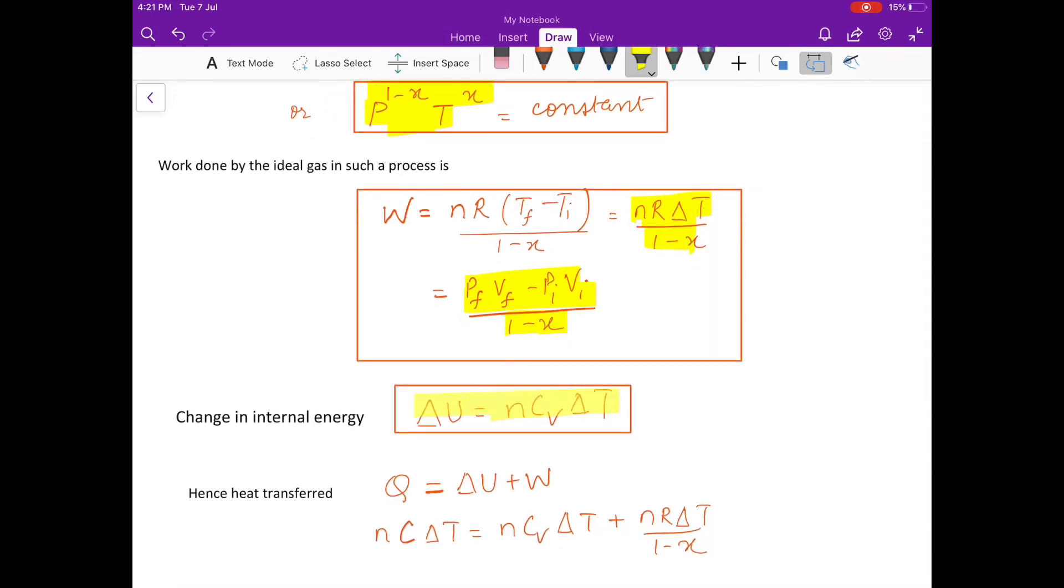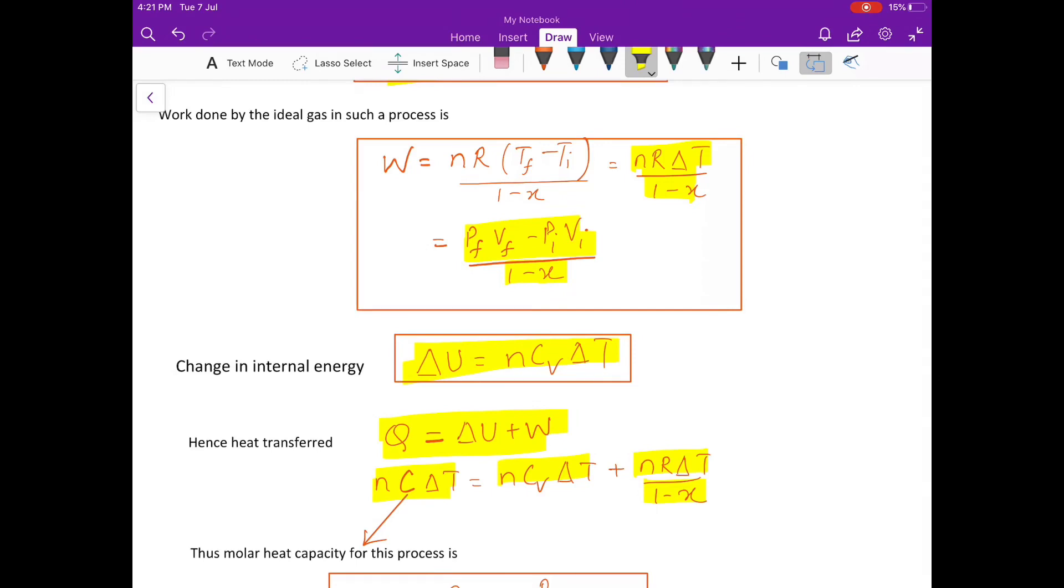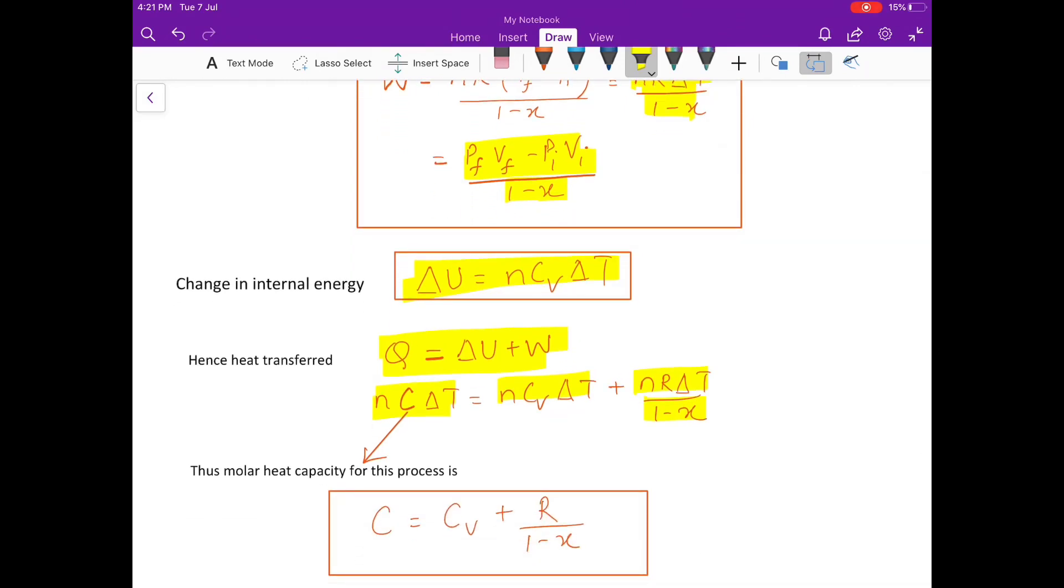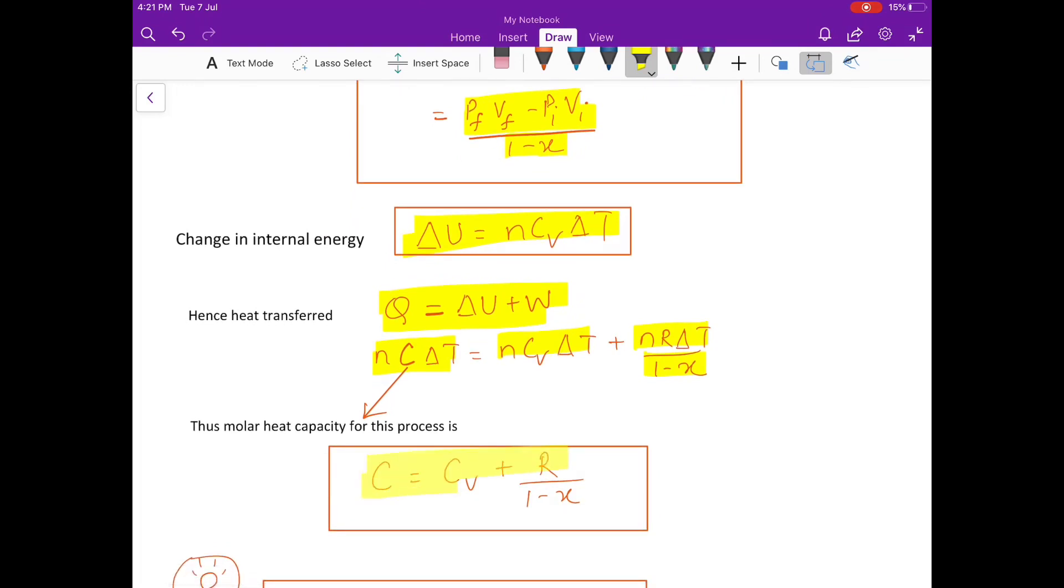Internal energy change, because it is an ideal gas, you can always write NCV delta T. By ideal gas, delta U is NCV delta T. Therefore, what is the amount of heat transferred? You can write it as Q is equal to delta U plus W. So, writing Q as NC delta T, where by C, I mean molar heat capacity for this process, I can write NC delta T as NCV delta T plus NR delta T upon 1 minus X. So, using this, if I take the ratio of Q is to delta U is to W, or I can directly write C from here first, I can write C as CV plus R upon 1 minus X.